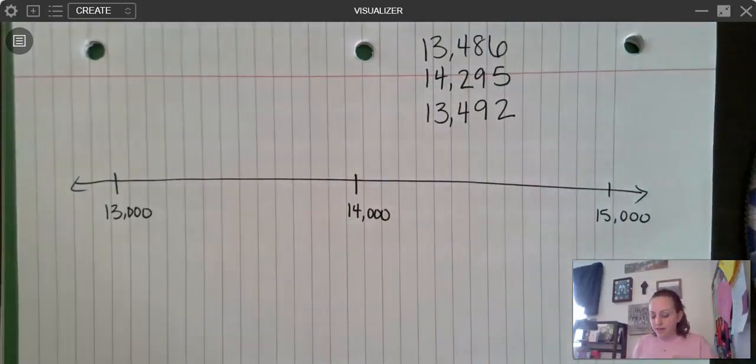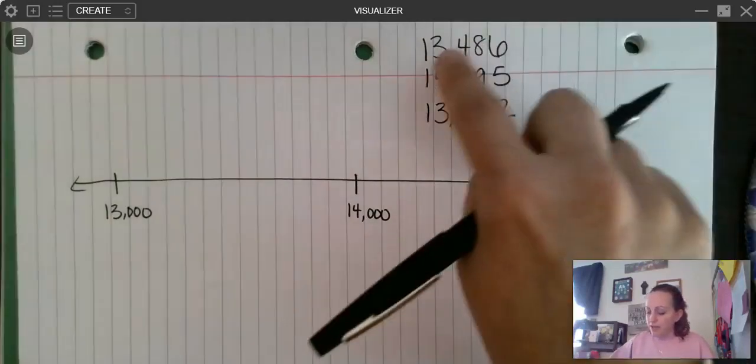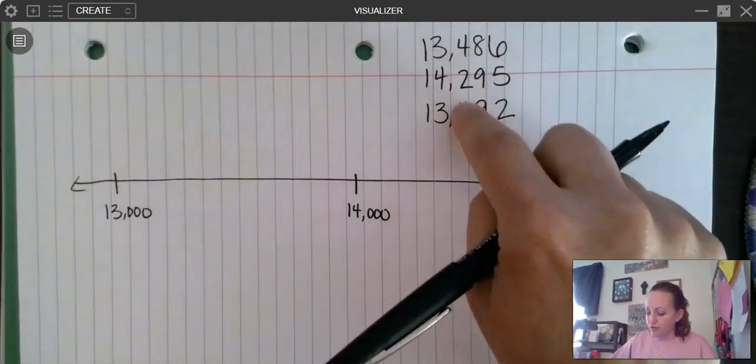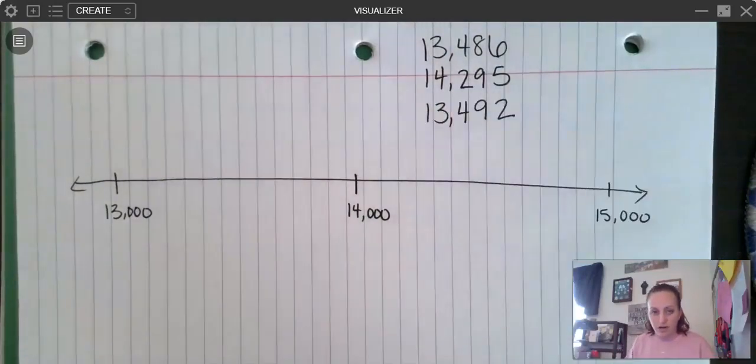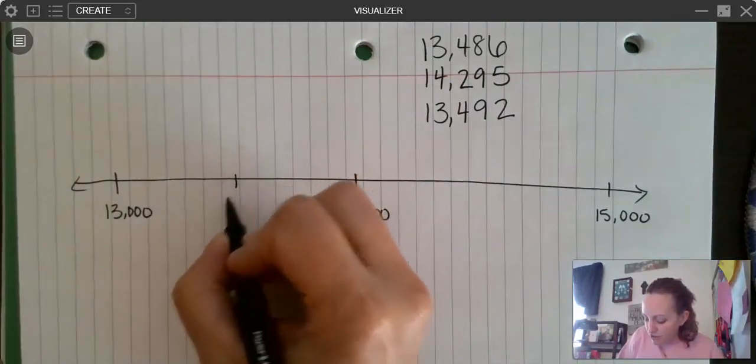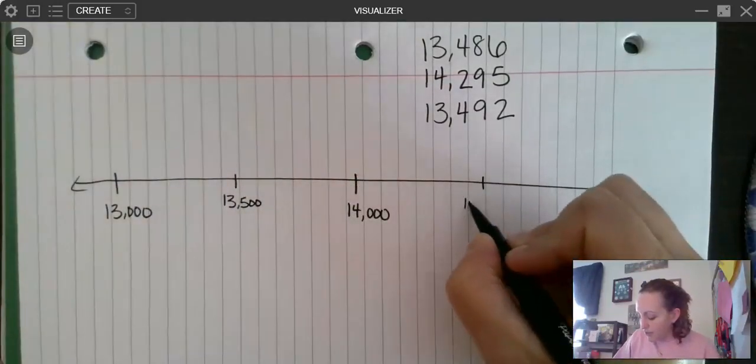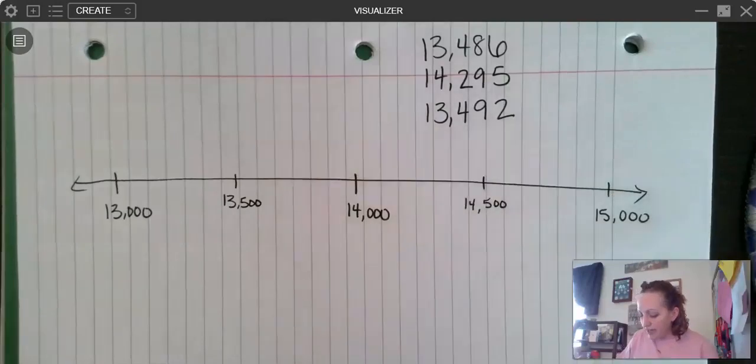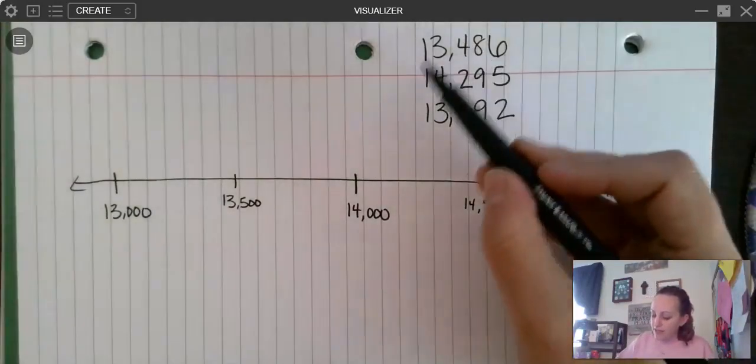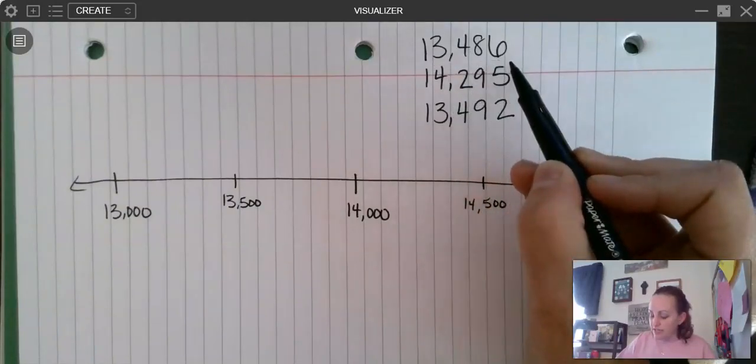All right. And now I'm going to kind of do like my hundreds. Now I'm not going to label every single one because that's going to get really jumbled. Okay. But I'm going to kind of now look at like the next digits. Okay. So we have 400, 400, and 200 here. All right. So I can have maybe, let's say this is 13,500 right here. Right. And then I'll split this one in half. And so that would be 14,500. And I kind of want to go in there. Now I'm looking at these two numbers, this one right here, and it says 13,486. Okay.